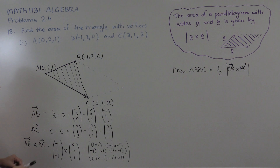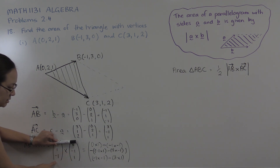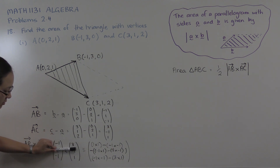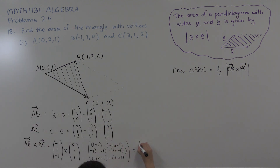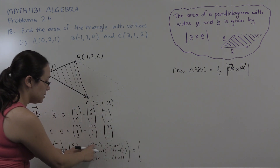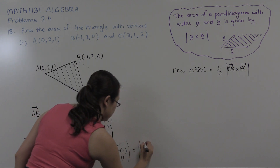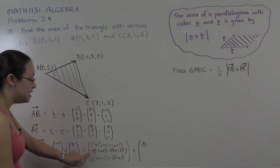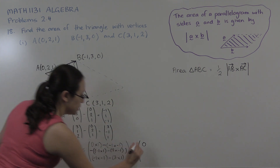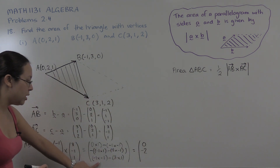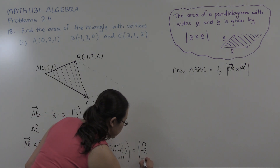To recap: for the cross product, the first component blocks out the first row — this times this minus this times this. The second component blocks out the second row with a negative sign — negative of that times that minus that times that. The third component blocks out the last row — that times that minus that times that. Computing these: the first component is 1 minus 1 = 0; the second is negative of (−1 + 3) = −2; the third is 1 − 3 = −2.